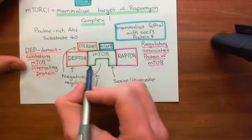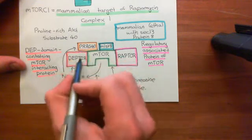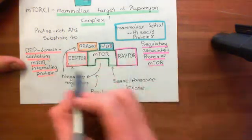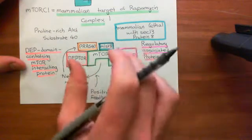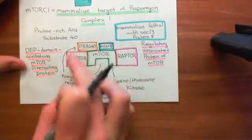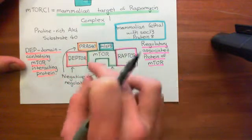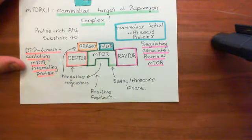Of course, this enzyme will not be phosphorylating its own PRAS40 and DEPTOR. It will phosphorylate the PRAS40 and DEPTOR on another mTORC1 complex. So it's not one mTORC1 activating itself — it will be activating other mTORC1 complexes, but overall positively feeding back the activation of mTORC1 within the cell.